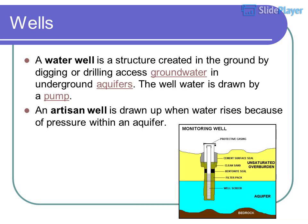A water well is a structure created in the ground by digging or drilling to access groundwater in underground aquifers. Well water is drawn by a pump. An artesian well is drawn up when water rises because of pressure within an aquifer.